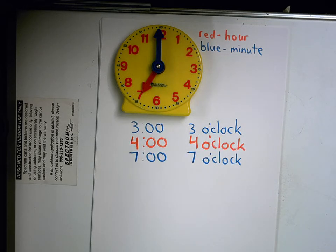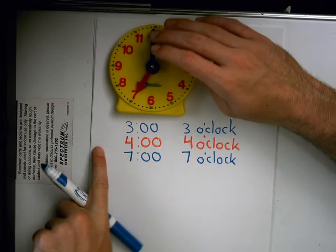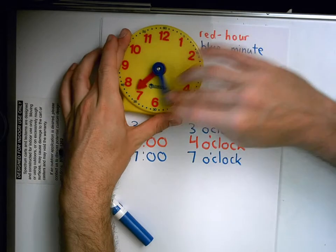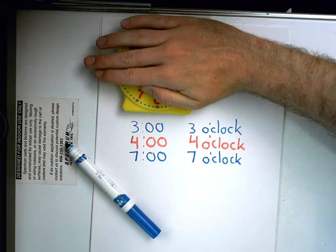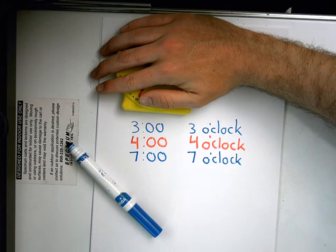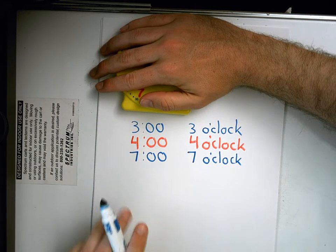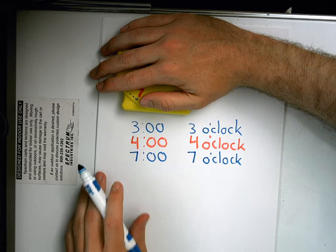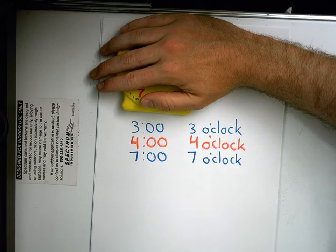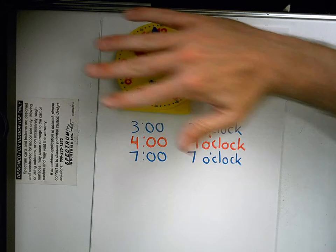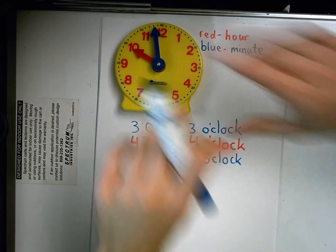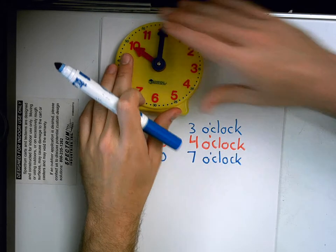One more thing before we stop. This hour hand is going to go around one, two, three more times. I'm going to cover it. If it was seven o'clock and the minute hand went around three more times, who thinks they can figure out what time it's going to be now? Logan. Let's see. Does that say 10 o'clock?